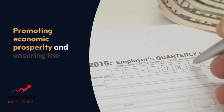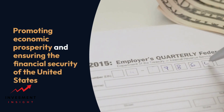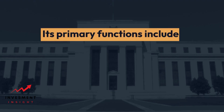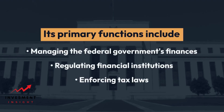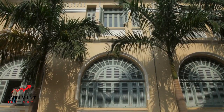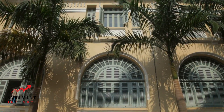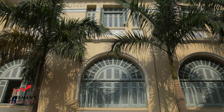Overview of the U.S. Treasury Role and Functions: The U.S. Treasury is the executive agency responsible for promoting economic prosperity and ensuring the financial security of the United States. Its primary functions include managing the federal government's finances, regulating financial institutions, and enforcing tax laws. The Treasury also plays a key role in shaping economic policy, both domestically and internationally.